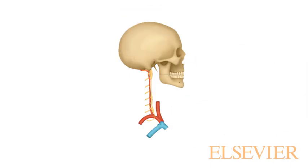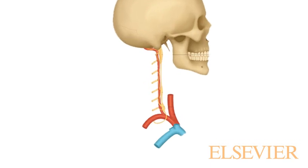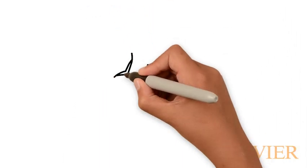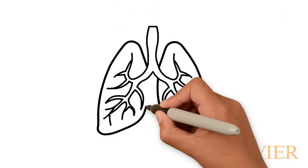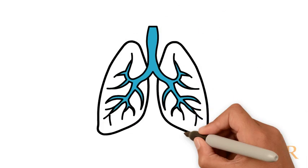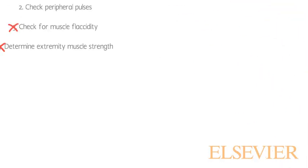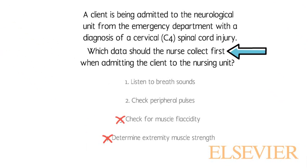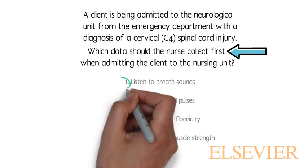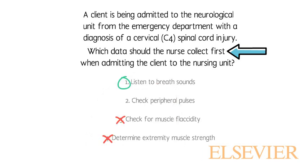Remember that a cord injury, particularly at the level of C4, can affect respiratory status. Breath sounds will be diminished if respiratory muscles are weakened or paralyzed. The correct answer is one: listen to breath sounds.